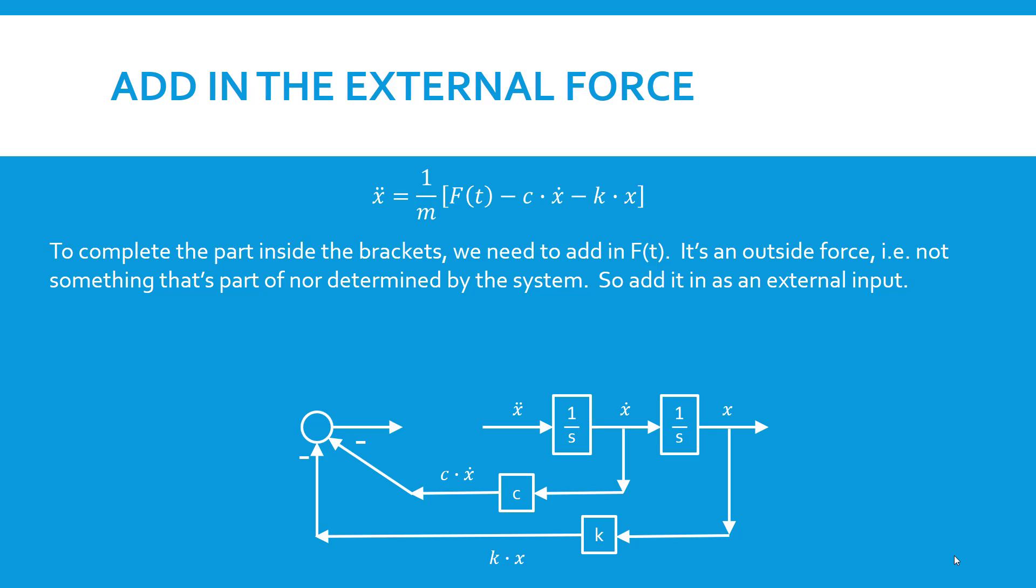If we look again at the term inside the brackets, we see that we need to add ft to it, the driving function or the external function that's applied to the mass. It's added in a positive way. Now ft is an external input, not part of the system. You can apply different types of force to it. It could be a step function, a sinusoid, a sawtooth function, or anything you wanted it to be. It's something that's determined from outside of the system. So we add it in as an external force, an input to the system.